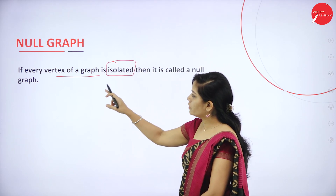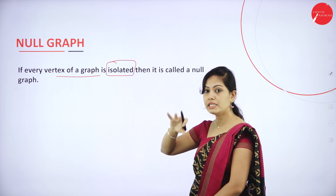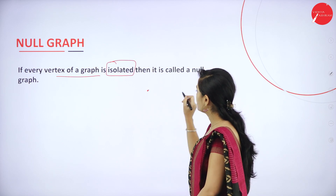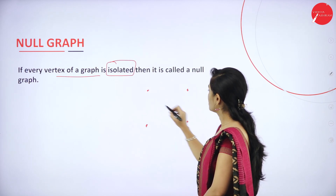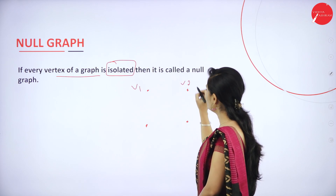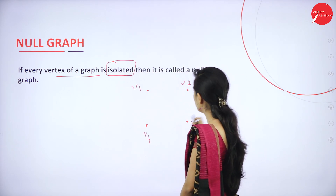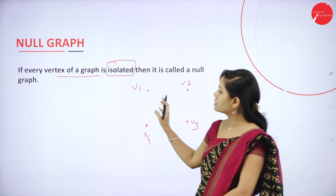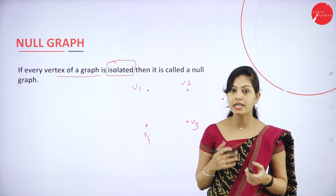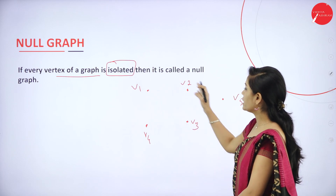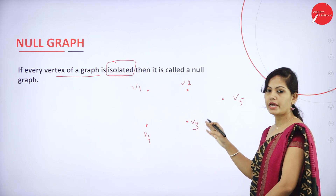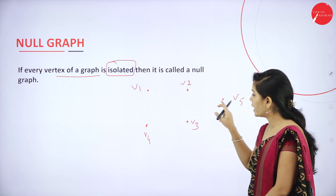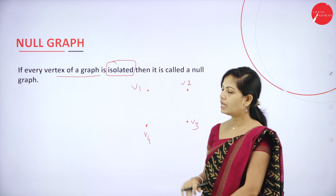For example, a graph with vertices V1, V2, V3, V4, and V5 — where none of them are connected to any edges. Since every vertex is isolated (no incident edges), we consider this a null graph. If every vertex of a graph is isolated, then it is a null graph.